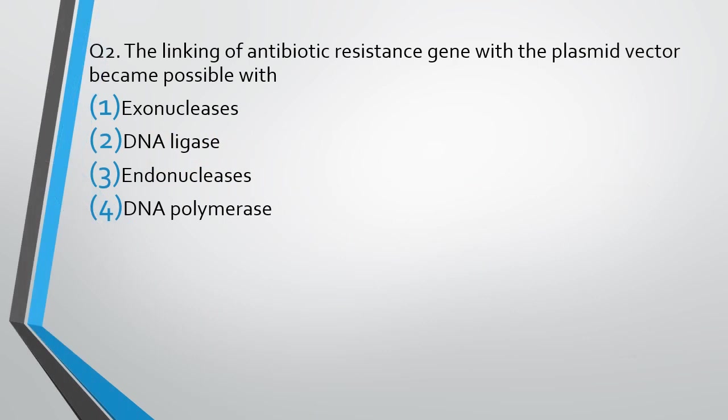Question number 2. The linking of antibiotic resistant genes with plasmid vector became possible with: exonucleases, DNA ligases, endonucleases, or DNA polymerases. The correct answer is option 2. With the discovery of DNA ligase, the linking of genes became possible.